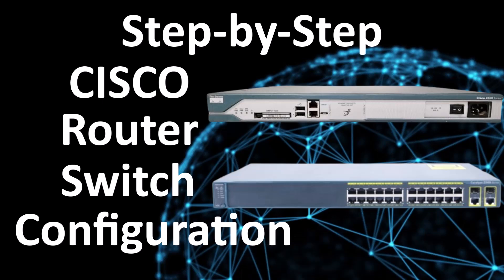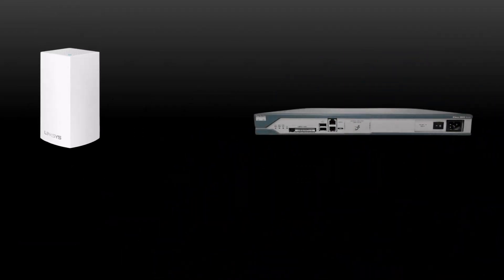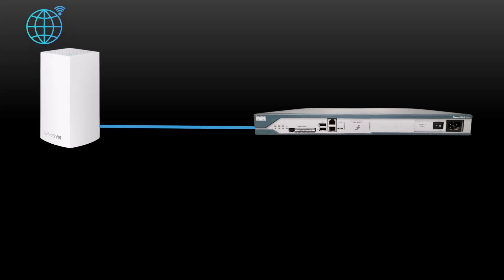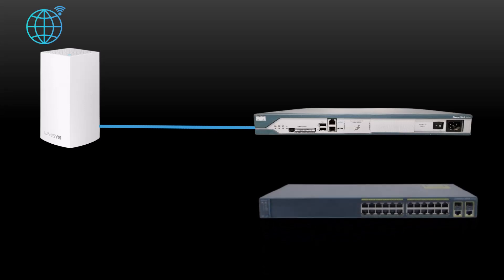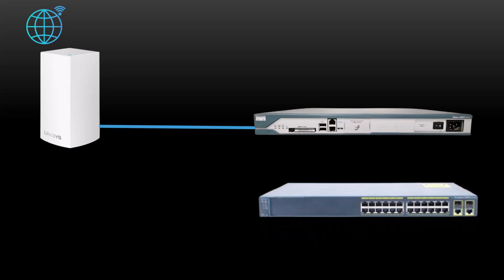First, let me show you my network topology. This is my last video topology, where I connected and configured my Cisco router with my home or office internet. And now, in this video, I'm going to add a Cisco switch to the same topology. I'll connect the FastEthernet0/1 port of my Cisco router to the GigabitEthernet1/0/24 port on the newly added Cisco switch.